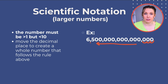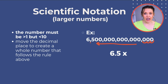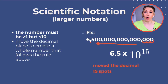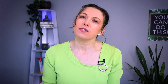Remember, it has to be between 1 and 10, so I can't do 65 — it has to be between 1 and 10. So we've got 6.5. Then I'm going to multiply that by 10 to the power of 15. Because I moved my decimal point over 15 places, that's where the 15 comes from. So it's 6.5 times 10 to the 15th.